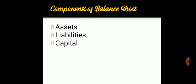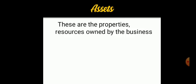In a balance sheet you have assets, liabilities, and capital. Your assets are the properties owned by the business. The properties of a business could include your building, your stock, your furniture, your motor vehicle, and your cash. The building, the furniture, the cash, and the goods that the business is selling are all properties of the business — so they are all assets.